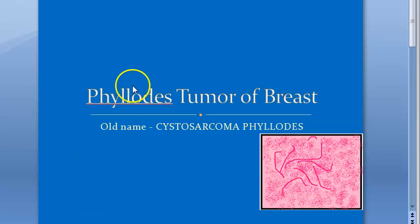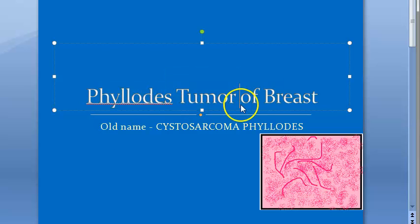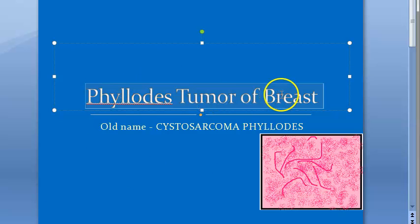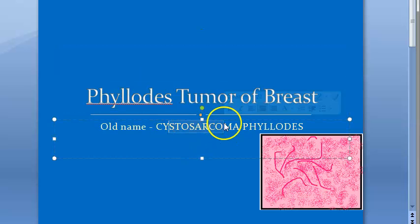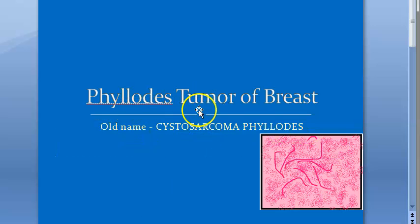In this video we want to look at phylloides tumor of the breast. Earlier it was called cystosarcoma phylloides, but this is not the correct name. The correct name now is phylloides tumor of breast.